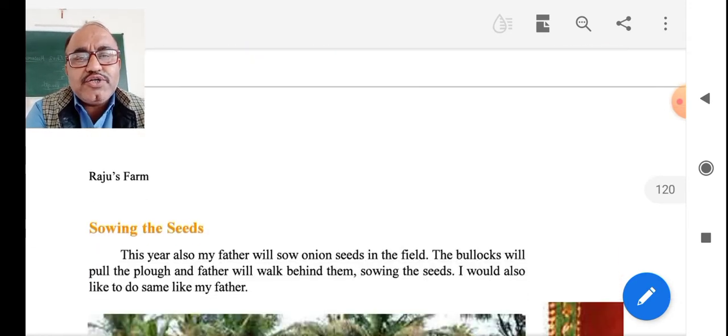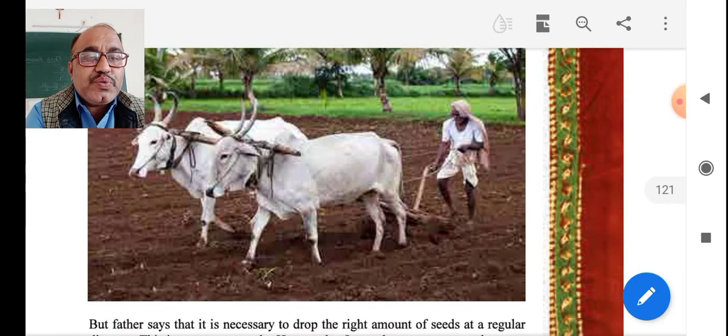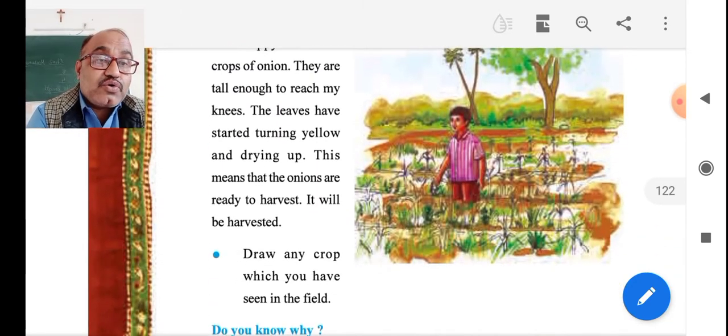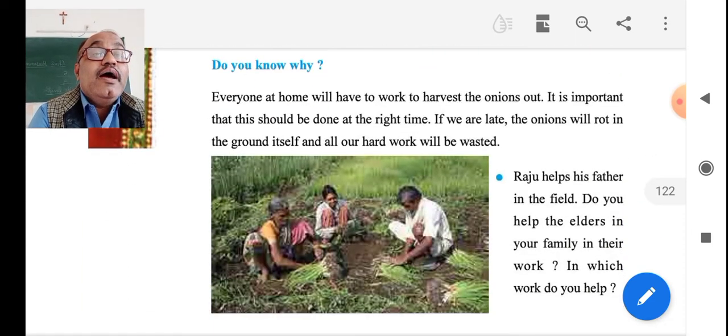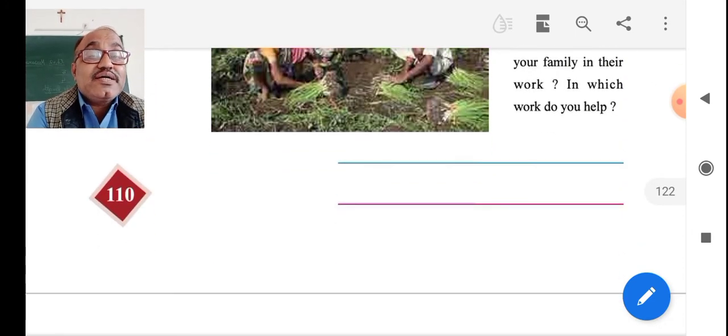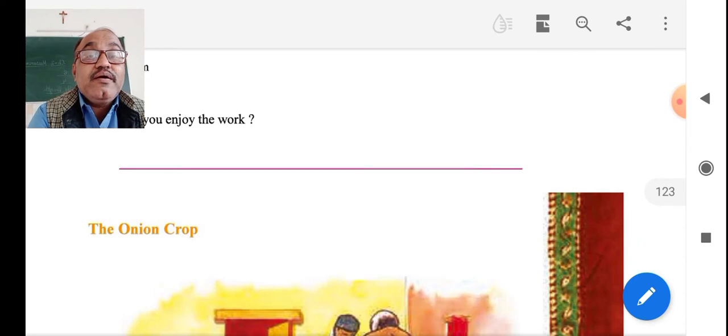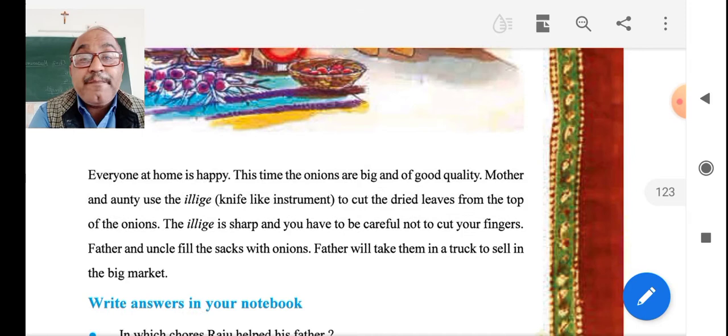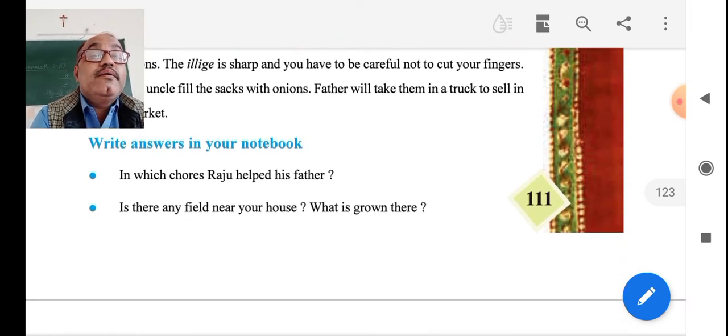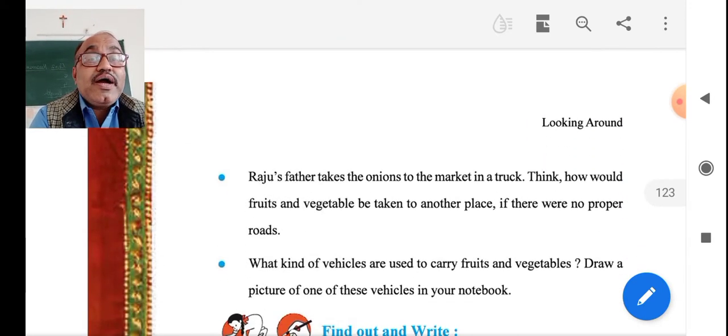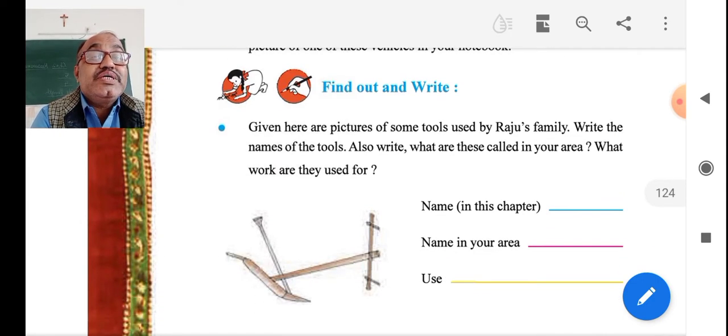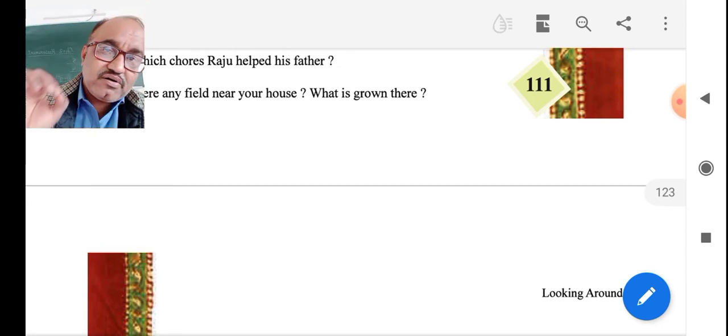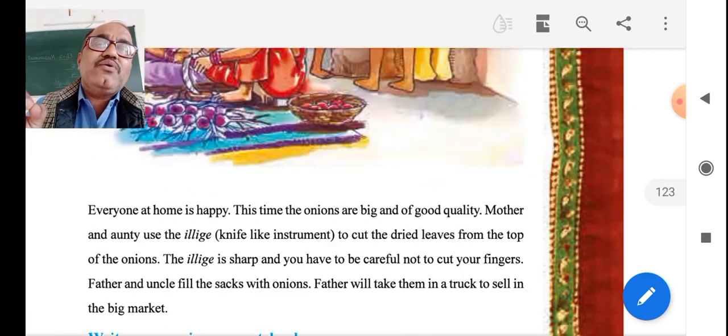we shall continue more about the sowing seeds, then sapling seeds, then growing plants, and harvesting, cutting, and reaping, and putting into the proper way. Then, what kind of help Raju was doing to his father? These are the main topics of the points which we have continued.